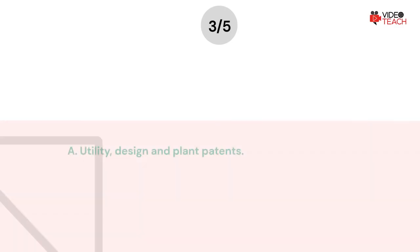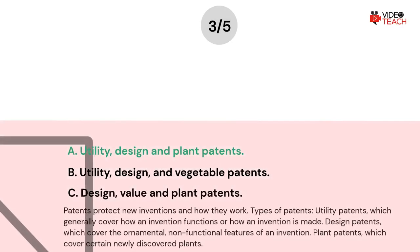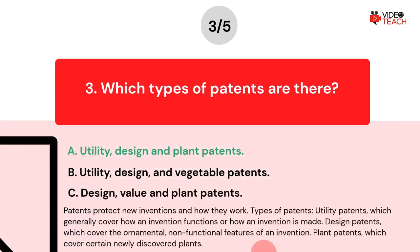The correct answer is A. Patents protect new inventions and how they work. Types of patents: utility patents, which generally cover how an invention functions or how an invention is made; design patents, which cover the ornamental, non-functional features of an invention; and plant patents, which cover certain newly discovered plants.